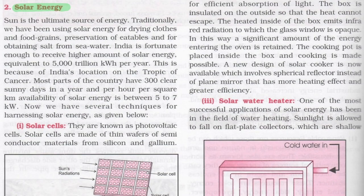Solar energy is also a renewable resource and is the ultimate source of energy. We use solar energy for drying clothes, food grain preservation, preservation of eatables, and for obtaining salt from seawater. India receives a higher amount of solar energy — equivalent to 5,000 trillion kilowatt per year — because of its location on the Tropic of Cancer. Most parts of the country have 300 clear sunny days in a year, and the per hour per square kilometer availability of solar energy is between 5 to 7 kilowatt.